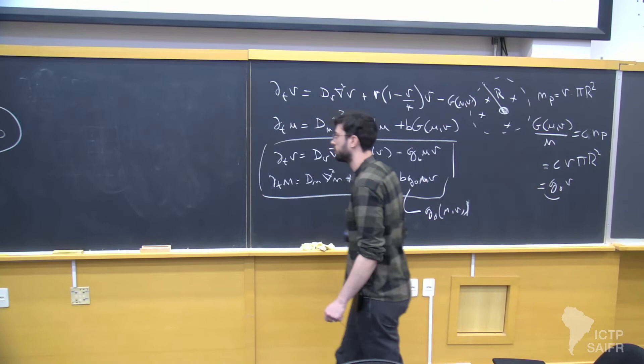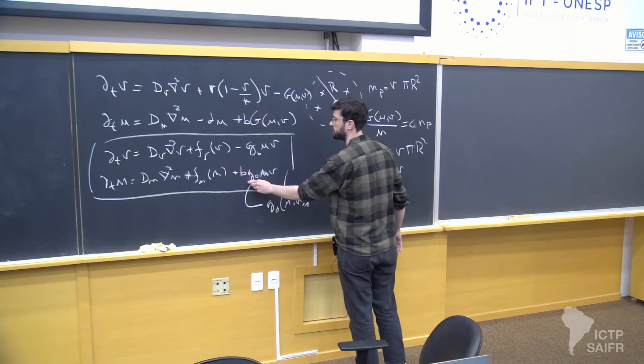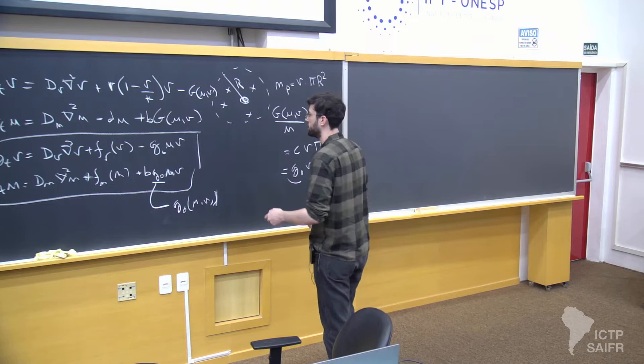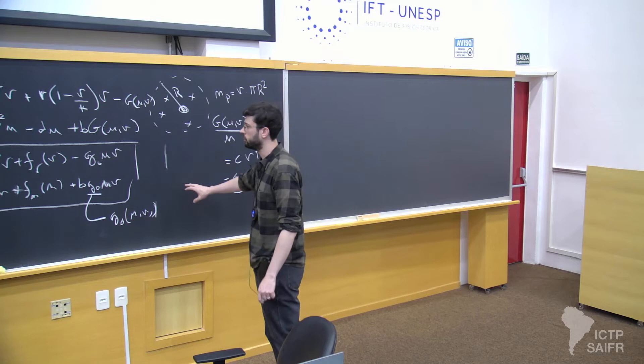So let's speed forward. The thing is that G0 is a constant in the standard case. When G0 is a constant, we get a specific type of stability for this equation — cycles or spirals toward a fixed point. The system is stable.